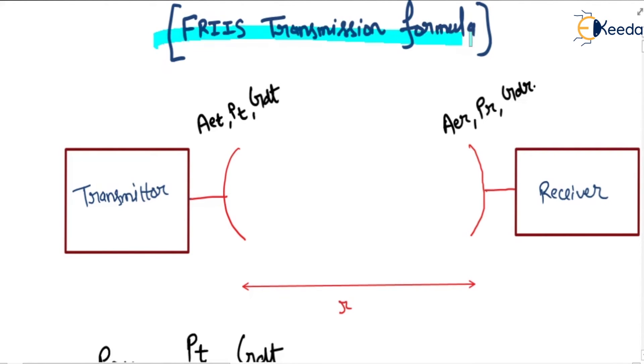Now we discuss Friis transmission formula. There is a transmitter and at some distance r there is a receiver. The transmitter has effective area AET, transmitted power PT, and directive gain GDT.